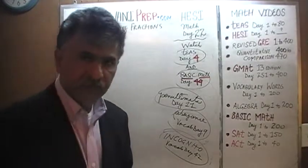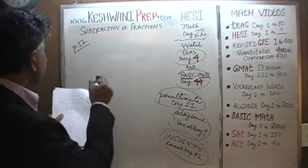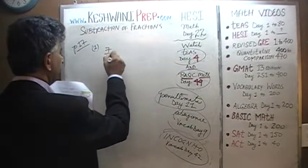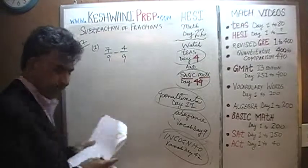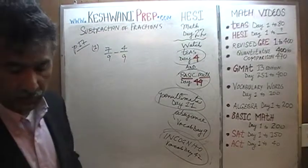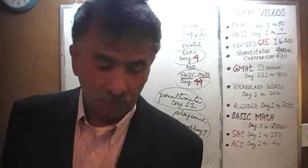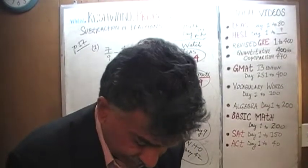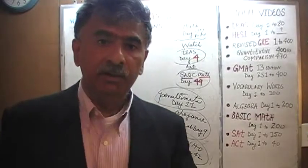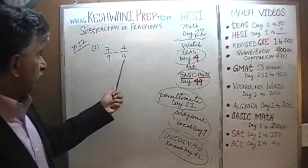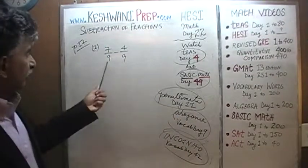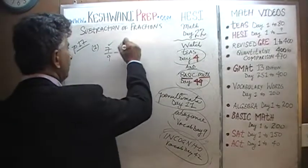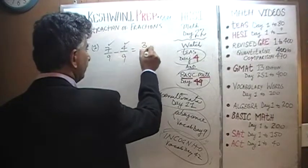The very first problem on page number 17 is a very simple, straightforward one — there is nothing to it. We are given 7/9 minus 4/9. The reason why it's very simple is because we don't have to do anything to find the common denominator — they already have a common denominator of 9 in both places. Since they have a common denominator, all we have to do is subtract the numerators: 7 minus 4 is 3, so we end up with 3 over 9.